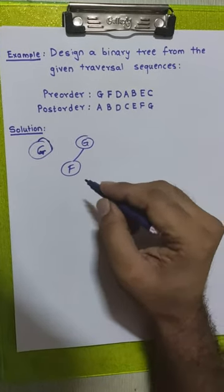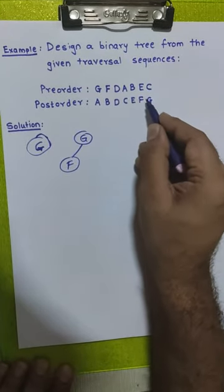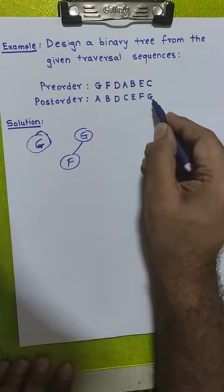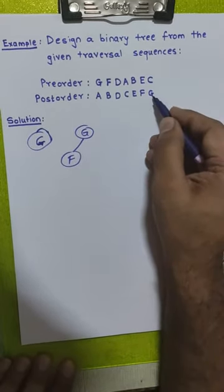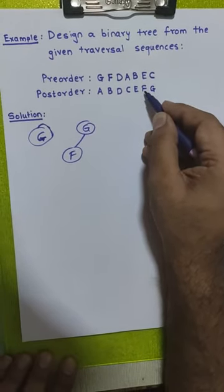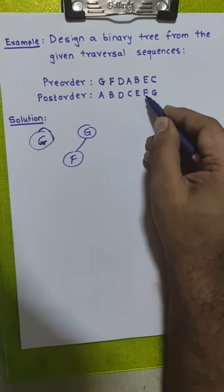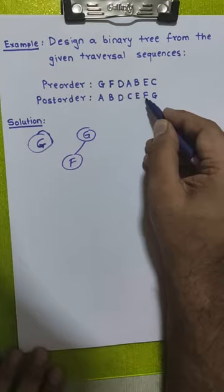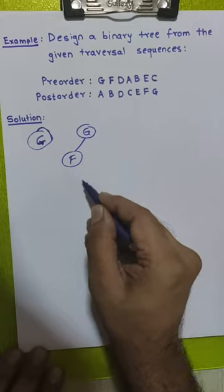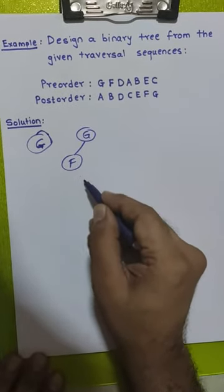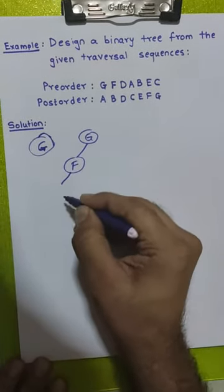After placing node F, we take the next element from the pre-order sequence: node D. We check it in the post-order sequence — it appears before G, meaning it is below node G, and it also appears before node F, meaning it is part of node F's subtree. We check node F: it has no left or right child, so in that situation we place node D to the left-hand side of node F.